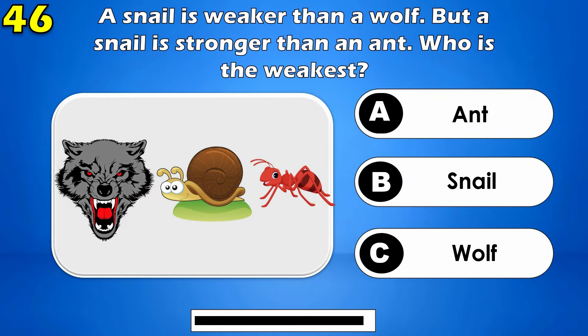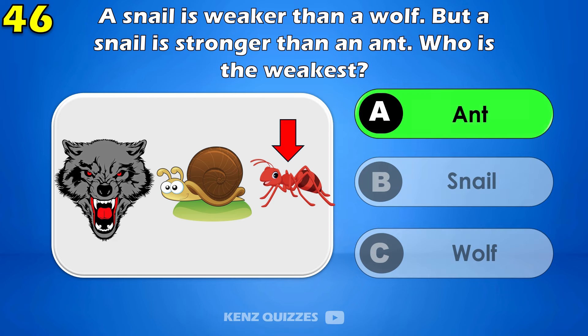A snail is weaker than a wolf, but a snail is stronger than an ant. Who is the weakest? The weakest one is ant.